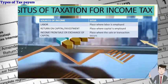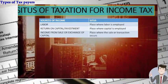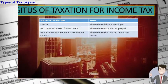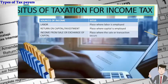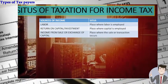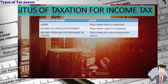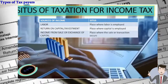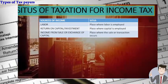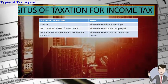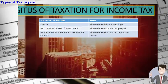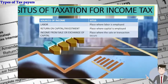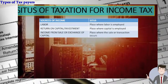For the situs of taxation for income tax: for labor income, the place of taxation is where the labor is employed. For return on capital or investment — dividends, interest, or other income — the place of taxation is where the capital is employed. For income from sale or exchange of capital assets, the place of taxation is where the sale or transaction occurs. Take note of these situs rules as you will use them to identify whether income is earned inside or outside the Philippines.